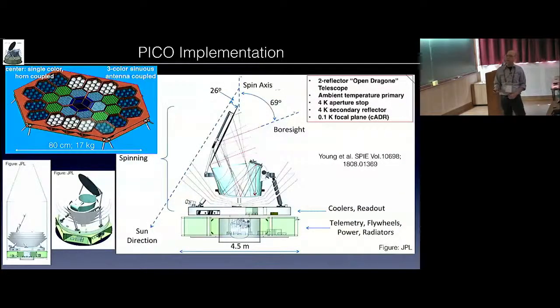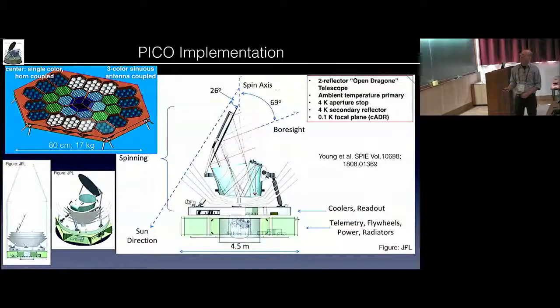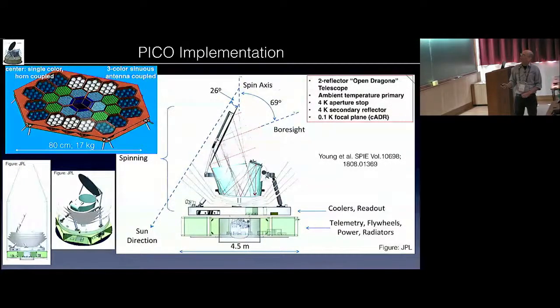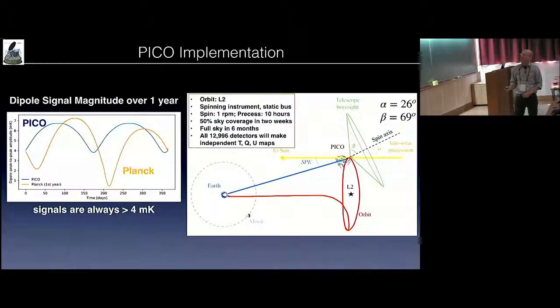Here are two slides on the implementation. It's a simple, straightforward implementation. Two reflectors and a focal plane, providing a large usable field of view with three color antenna coupled transition edge sensors. The spacecraft spins around this. This is a stationary bus and the spacecraft spins. We don't need to have three color antenna. We can do two colors or we can do one color with slightly less sensitivity. Ambient temperature primary, cooled secondary and 100 millikelvin focal plane. The Pico implementation is at L2, as has been described, similar to CORE. I won't dwell on that.